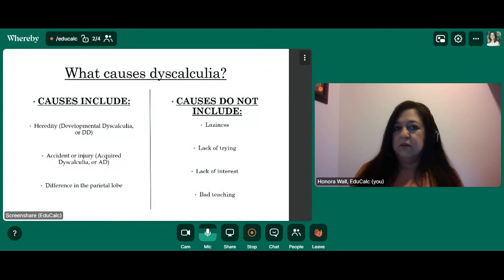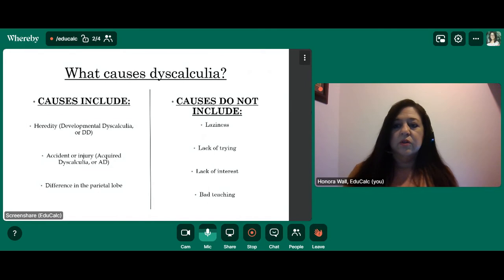What causes dyscalculia? The causes include heredity. You might have been born with dyscalculia, and in the research that is referred to as DD, developmental dyscalculia. Some people acquire dyscalculia after an injury or an accident that injures the parietal lobe, and this is called AD, acquired dyscalculia. Either way, it occurs in the parietal lobe of the brain.